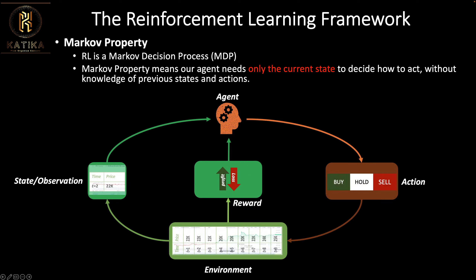Looking at our framework loop, we know that our agent is the one making decisions by taking actions. For it to obey the Markov property, the observation we give it is going to be the observation of one state. If we are making a decision at time t=2 we give information about t=2, seeing price 22k; at t=3 the agent sees price 21k. At any point in time the agent only receives information about its current state.